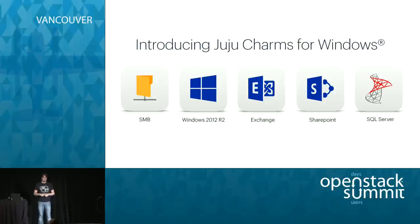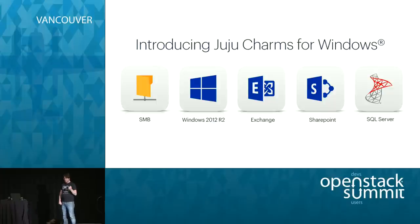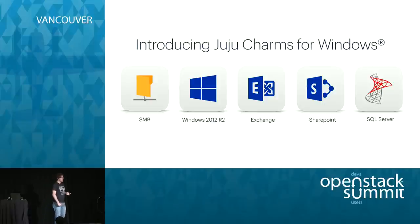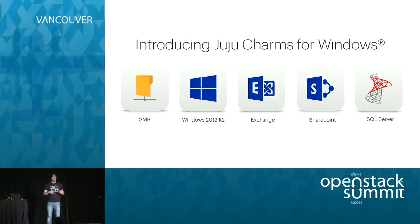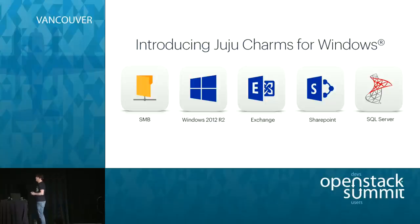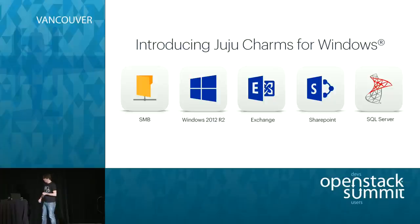We have all the main Microsoft-type workloads here — there were simply too many to put on a single slide. We have SMB, which is the charm for the file server using the SMB3 protocol; Windows Server 2012 R2 as a placeholder for VDI, which is an excellent use case in OpenStack and works extremely well with RemoteFX from Hyper-V; then Exchange, SharePoint Server, SQL Server. SQL Server comes in two flavors: SQL Server Express, which is free for everybody, and SQL Server Always On, which is a full-fledged fault-tolerant, high-availability, scalable cluster, completely deployed via our charms.